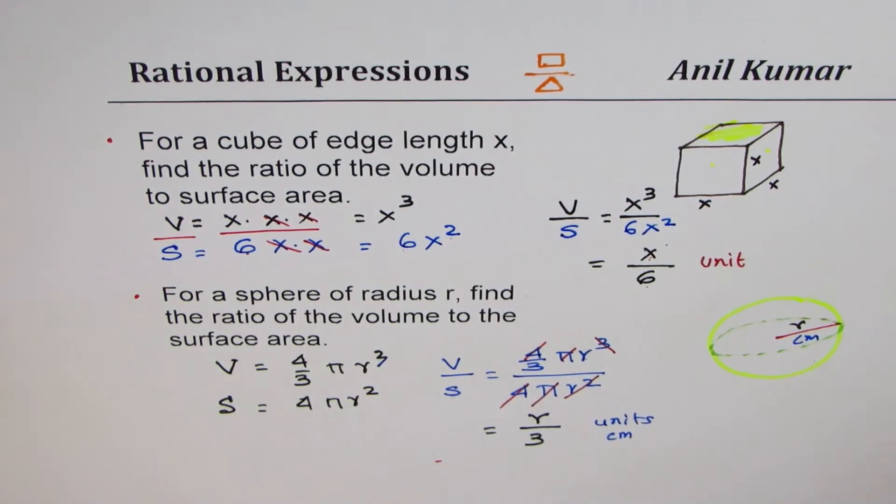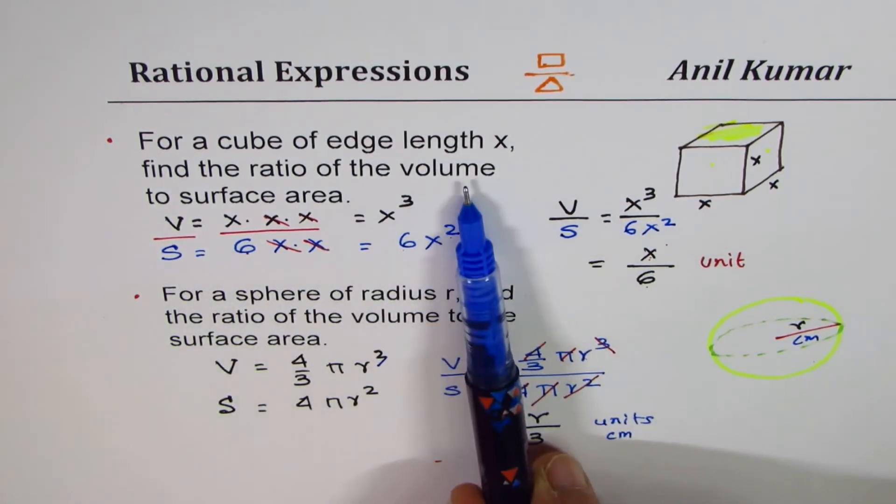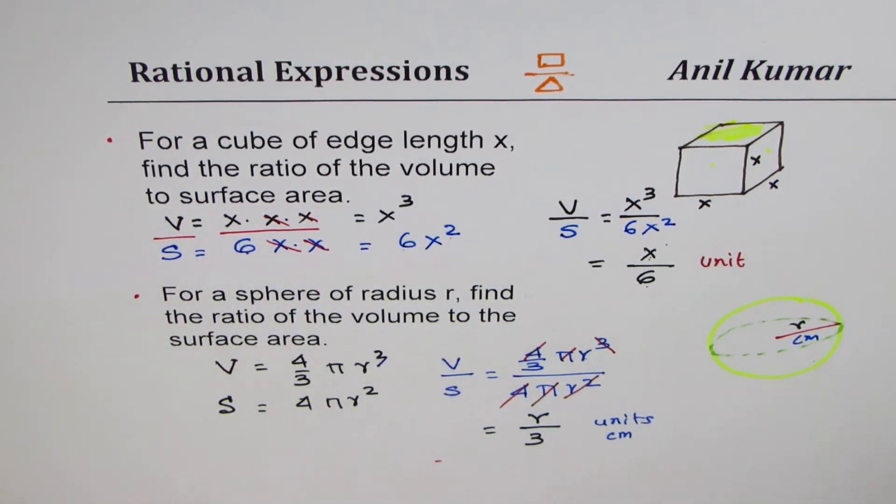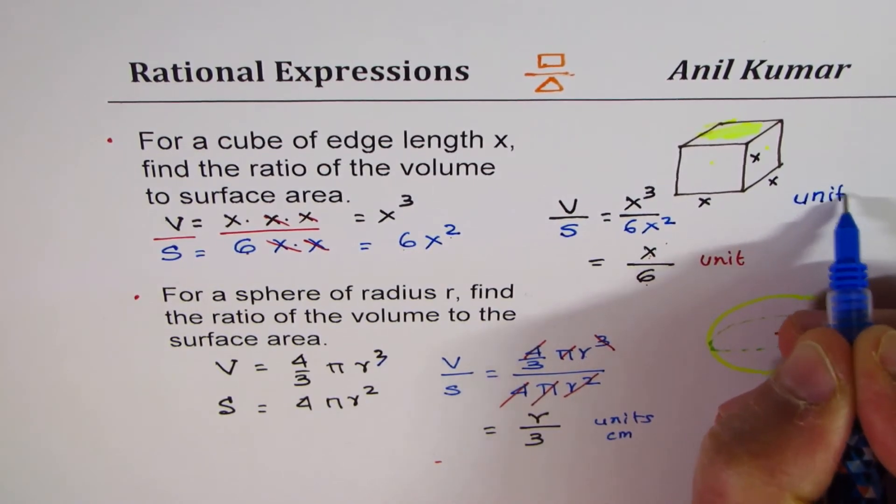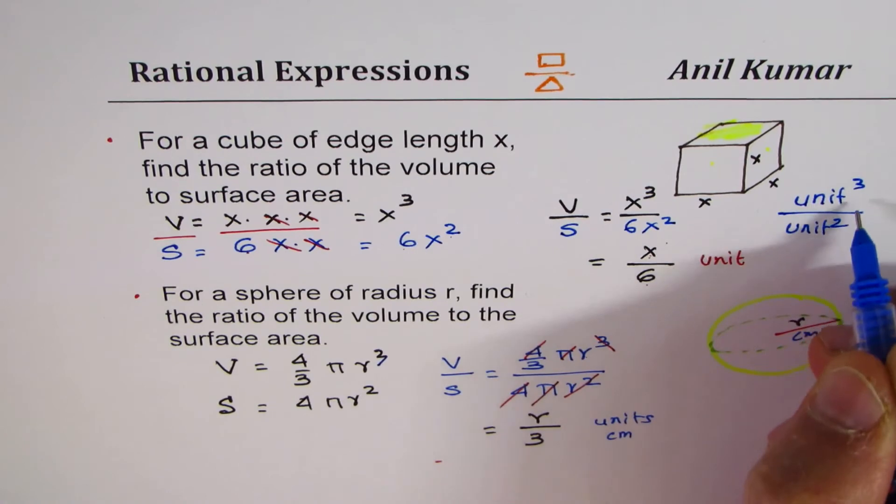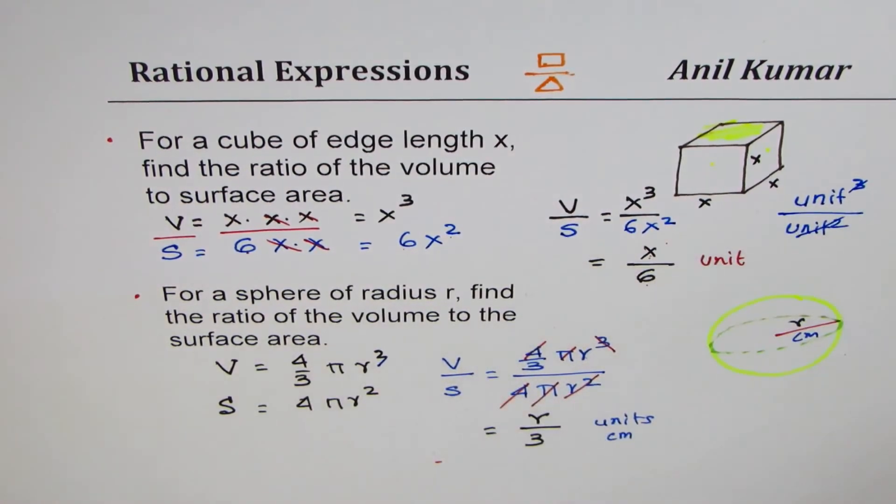It's important to write unit since volume will be measured in unit cube, surface area in unit square. So you have unit cube over unit square, and when they cancel out, you're left with units as the unit. I hope that helps.